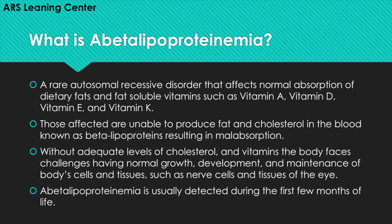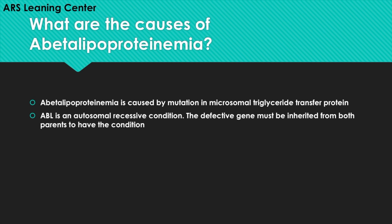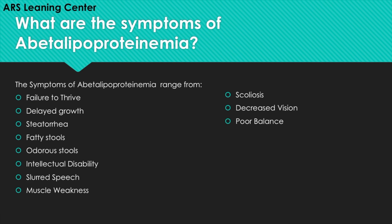Abetalipoproteinemia is usually detected during the first few months of life. What are the causes of abetalipoproteinemia? Abetalipoproteinemia is caused by a mutation in microsomal triglyceride transfer protein. ABL is an autosomal recessive condition, meaning the defective gene must be inherited from both parents to have the condition.